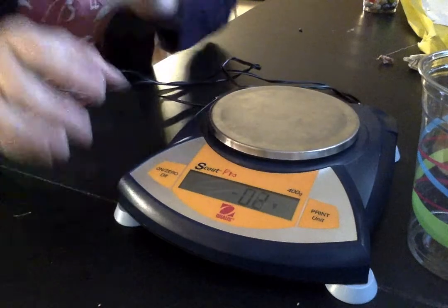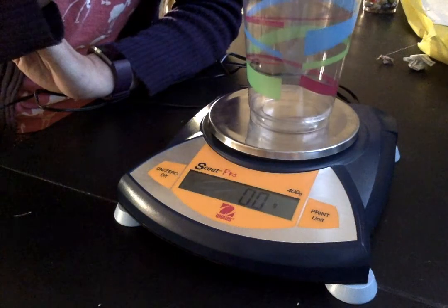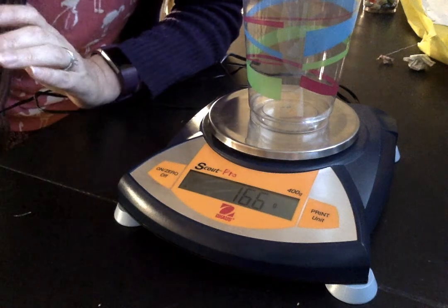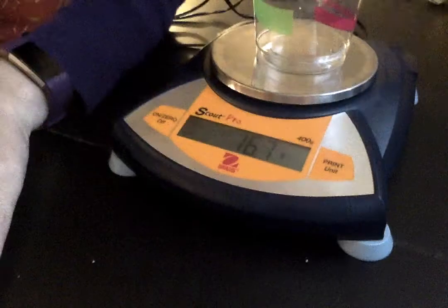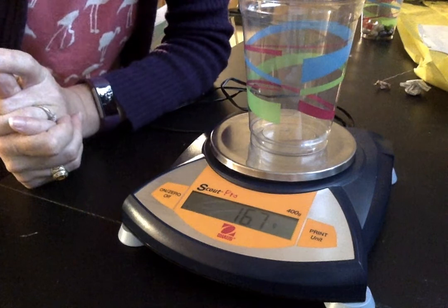So what I'm going to do is put the cup on the electronic balance to get the mass. And I can see the mass is 16.6 grams, or 16.7 grams as it took a second. And that's really all there is to it.